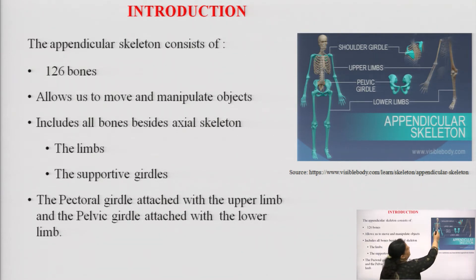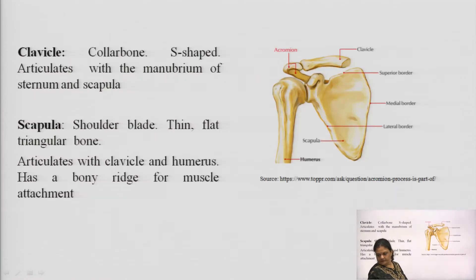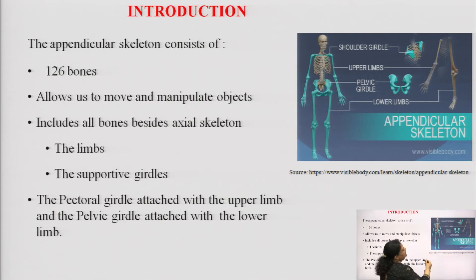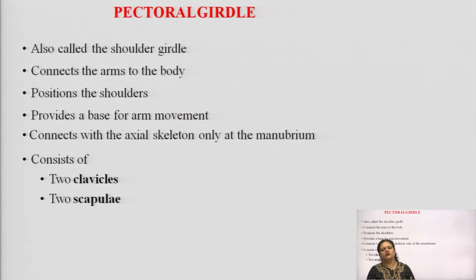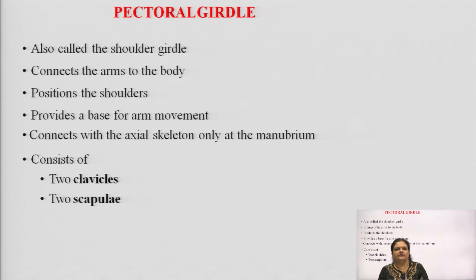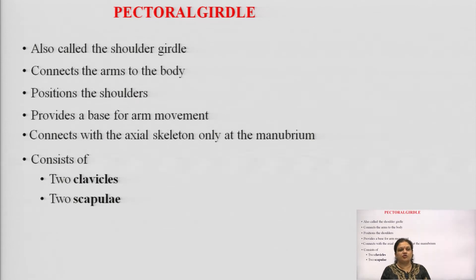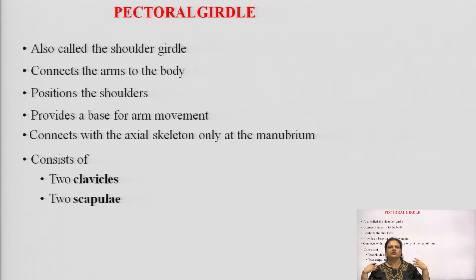This diagram represents the shoulder girdle, that is the pectoral girdle, then the upper limbs, then the pelvis girdle and pelvic cavity, which is directly connected to the bony structures of the lower limbs. Going in detail, first we will discuss the shoulder girdle or pectoral girdle. The shoulder girdle connects the upper arms or upper limbs of the body and positions the shoulder.